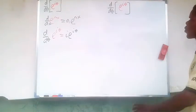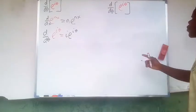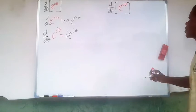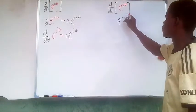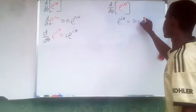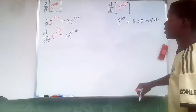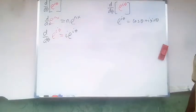Also, we can also have the derivative of this e to the i theta. We can notice here that e to the i theta is equal to cosine theta plus i sine theta. That is the polar form of the complex number. So we just substitute that in there and we differentiate.